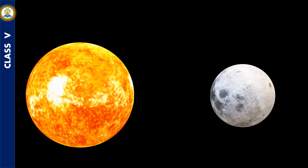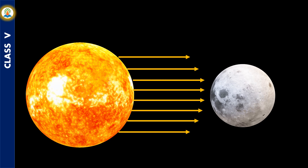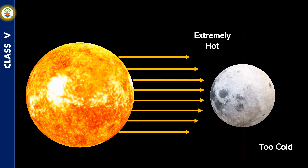There are no clouds to hide the Sun. The side of the Moon facing the Sun is extremely hot and the side away from the Sun is too cold to support life.